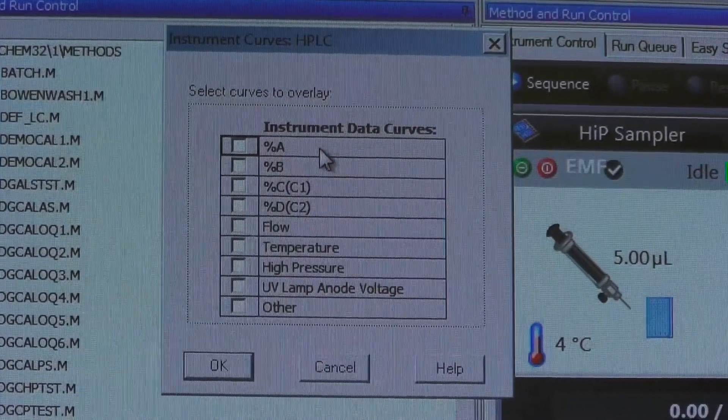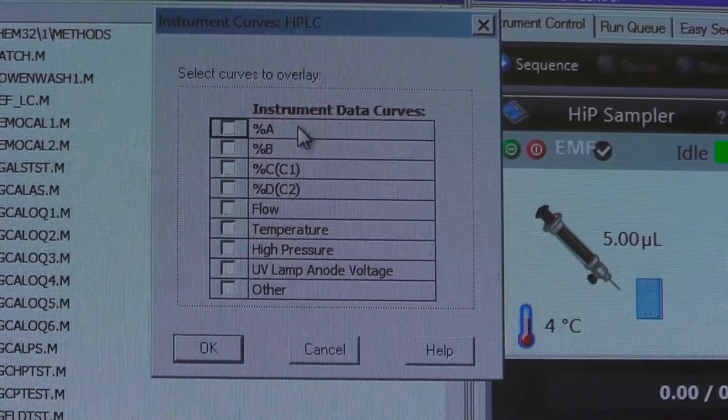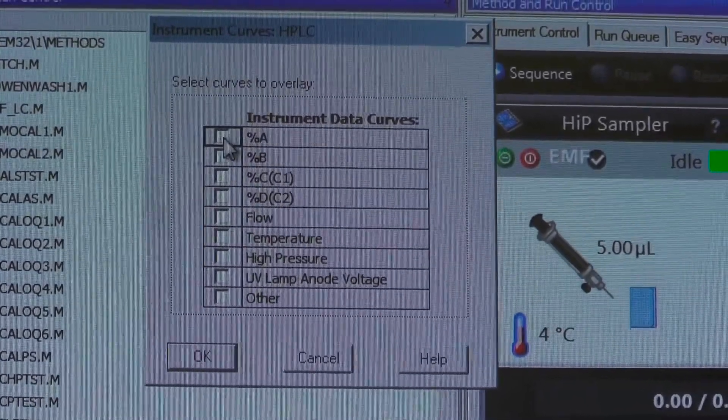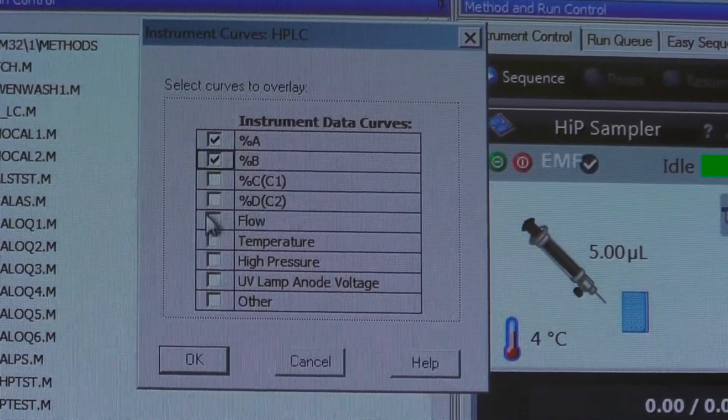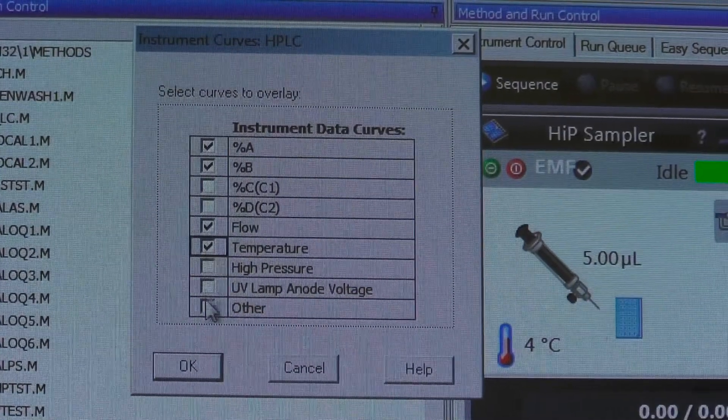This time, an Instrument Curves HPLC window will appear. Select all the Instrument Data Curves you need for future analysis. Click OK.